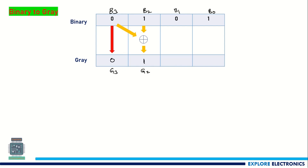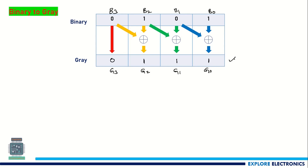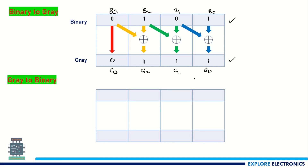To get G0, we XOR B1 and B0: 0 XOR 1 gives 1, so G0 = 1. So the gray code for binary 0101 is 0111. Now let us convert gray to binary. Let me take the same gray code 0111 as my gray code and convert it back to binary.